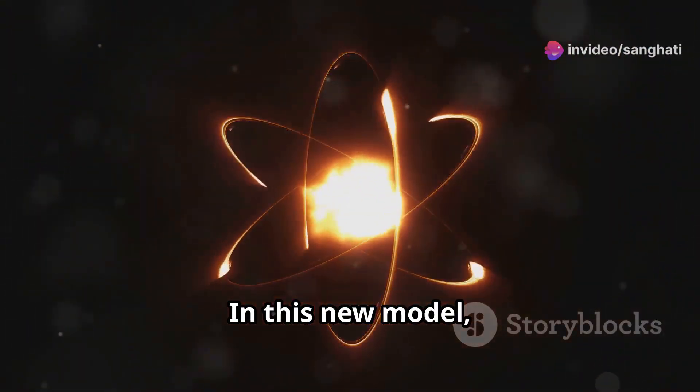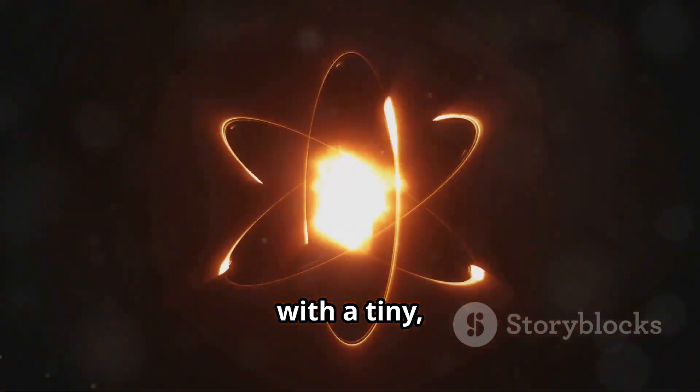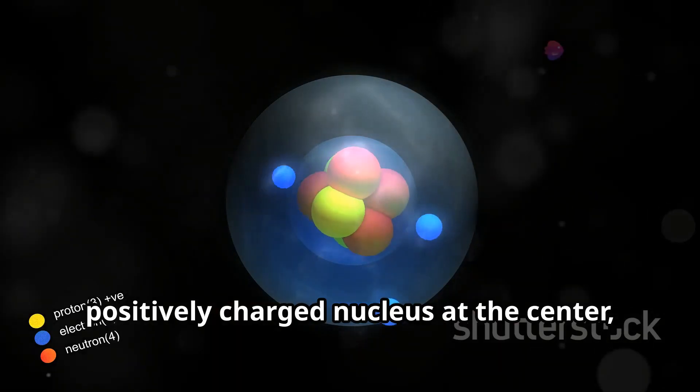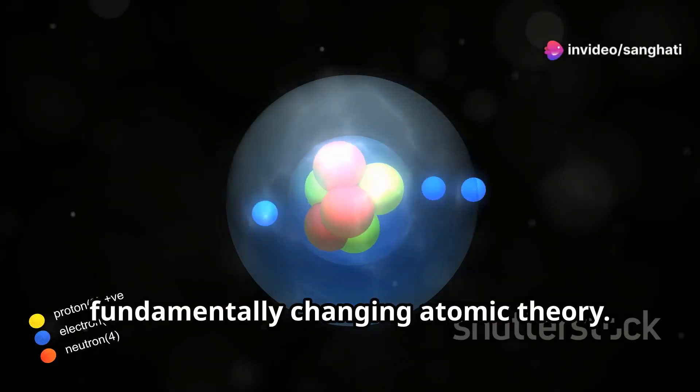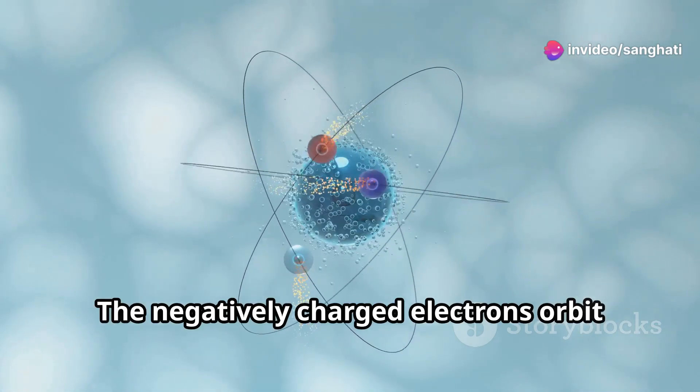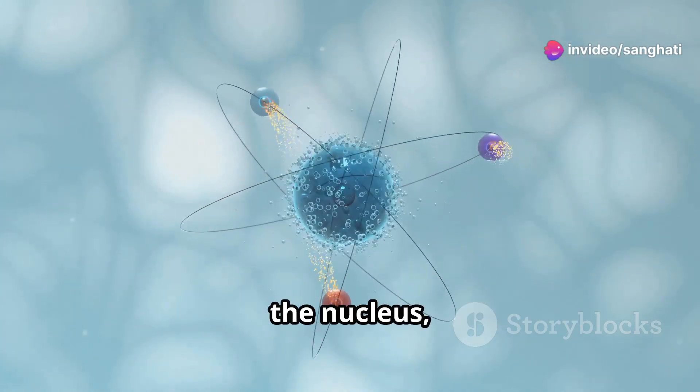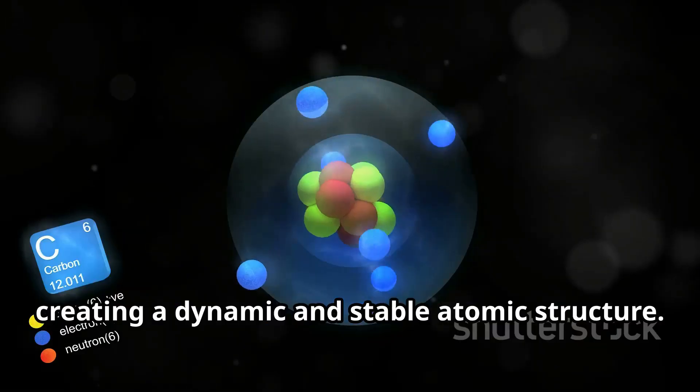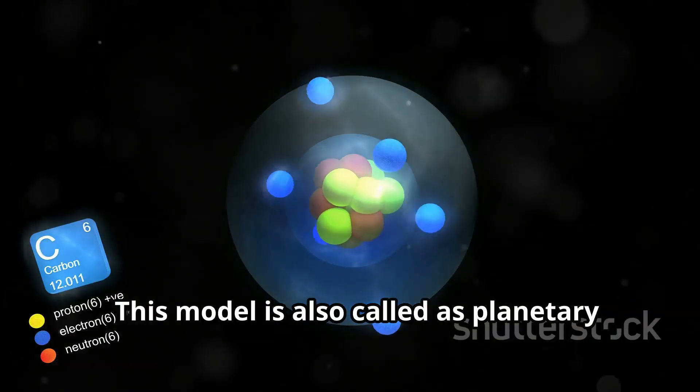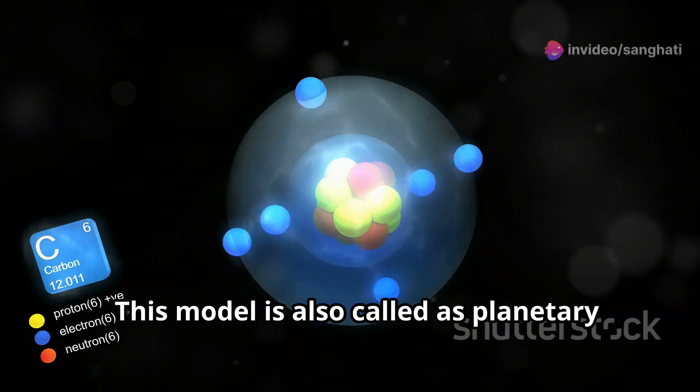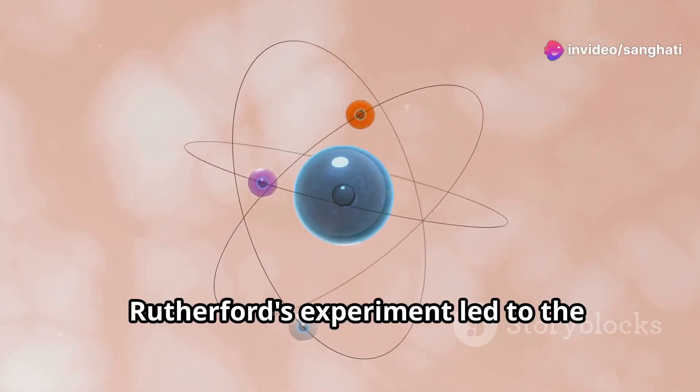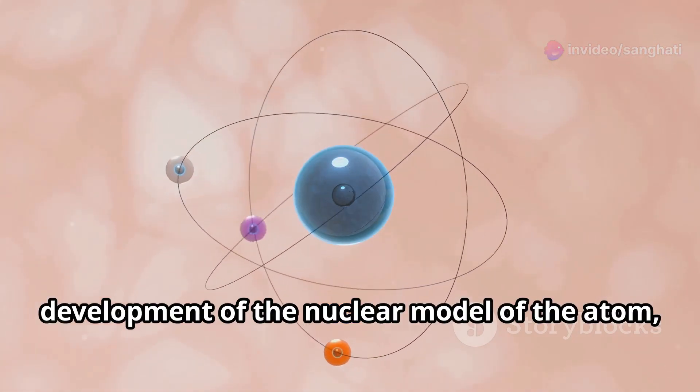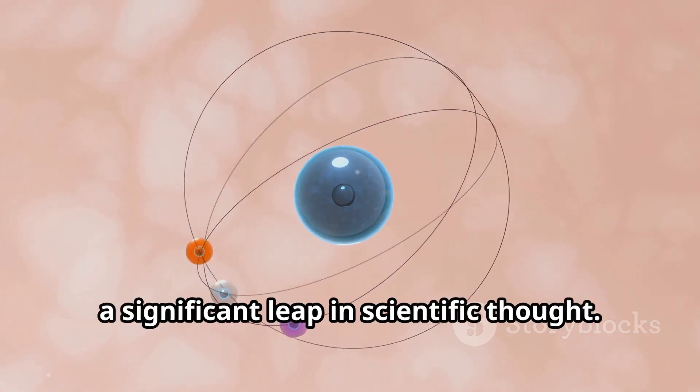In this new model, the atom is mostly empty space, with a tiny, dense, positively charged nucleus at the centre, fundamentally changing atomic theory. The negatively charged electrons orbit the nucleus, much like planets orbiting the sun, creating a dynamic and stable atomic structure. This model is also called the planetary model of atom. Rutherford's experiment led to the development of the nuclear model of the atom, a significant leap in scientific thought.